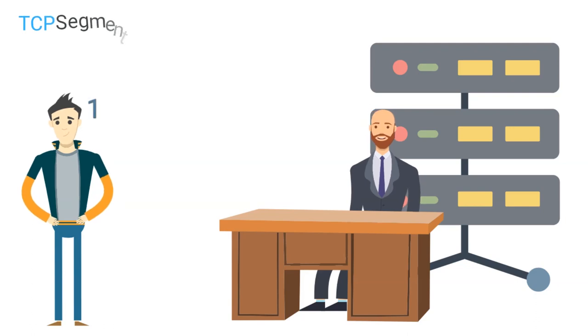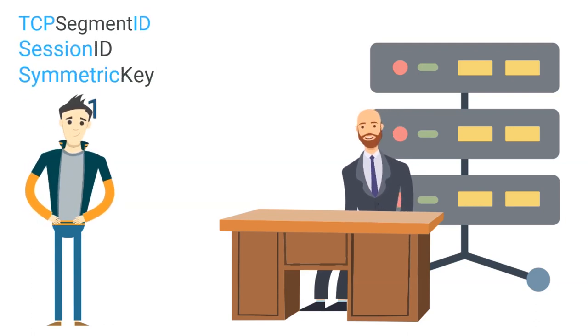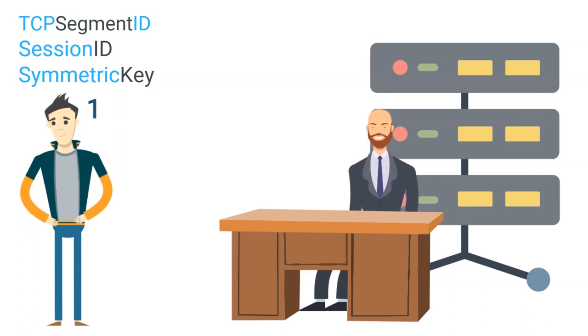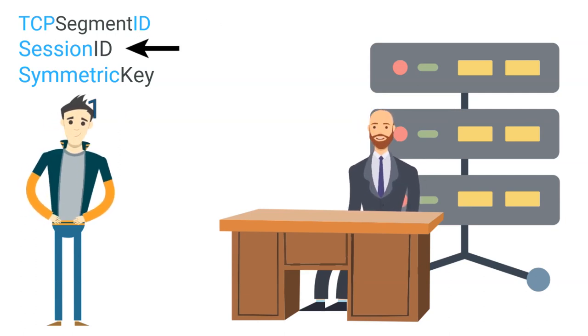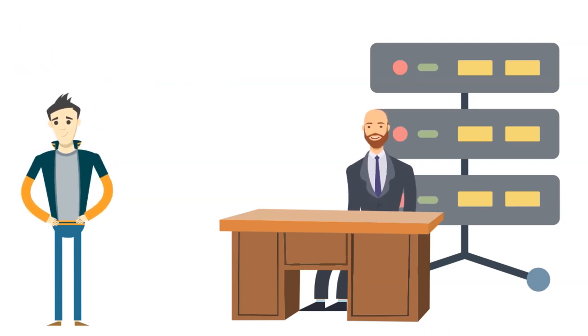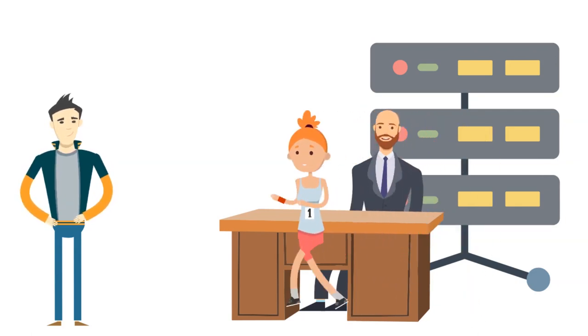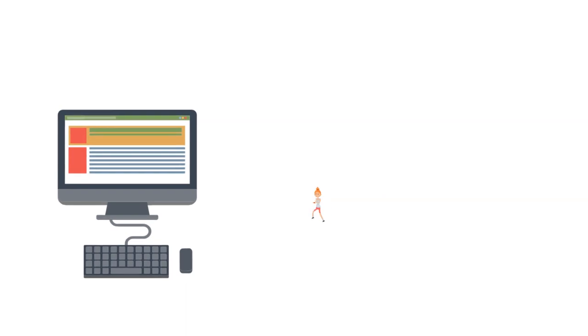Because of the segment ID, session ID, and symmetric key PDU gave the web server, the web server then knew which segment of the data he was, who was logged into the website, and how to decrypt the data. From here, the web server sends its own PDU from its network back to our network so our PC can load the web page.